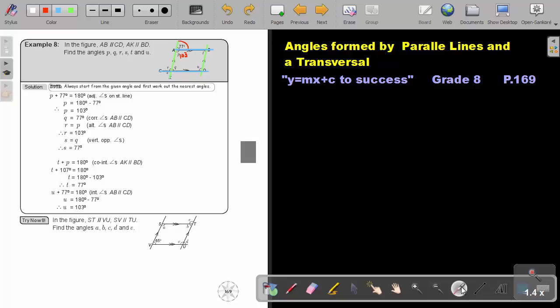So Q will be equal to that 77. There is my F. And that will be, let's just highlight, there is my F. And that is corresponding angles. So the value of Q is 77 and it's corresponding angles because AB is parallel to CD.